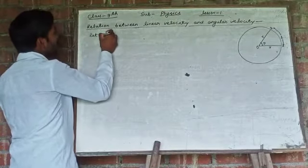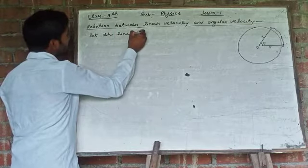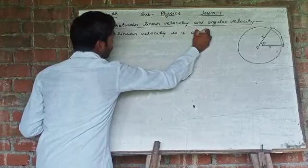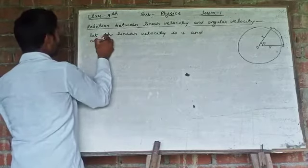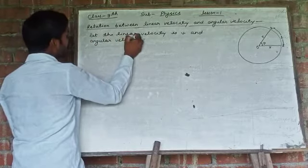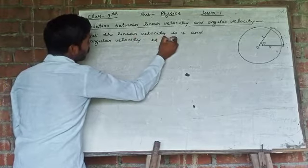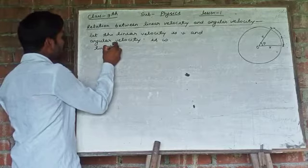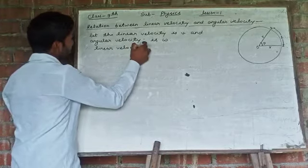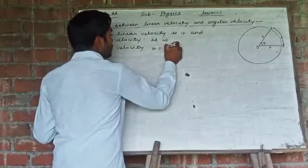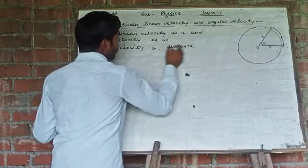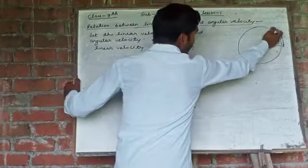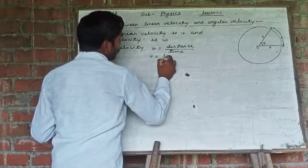So, let the linear velocity is V and angular velocity is ω. So, V is equal to distance upon time we know. So, V is equal to distance, it will be L and time is T. So, V is equal to L upon T. That is basic equation number 1.